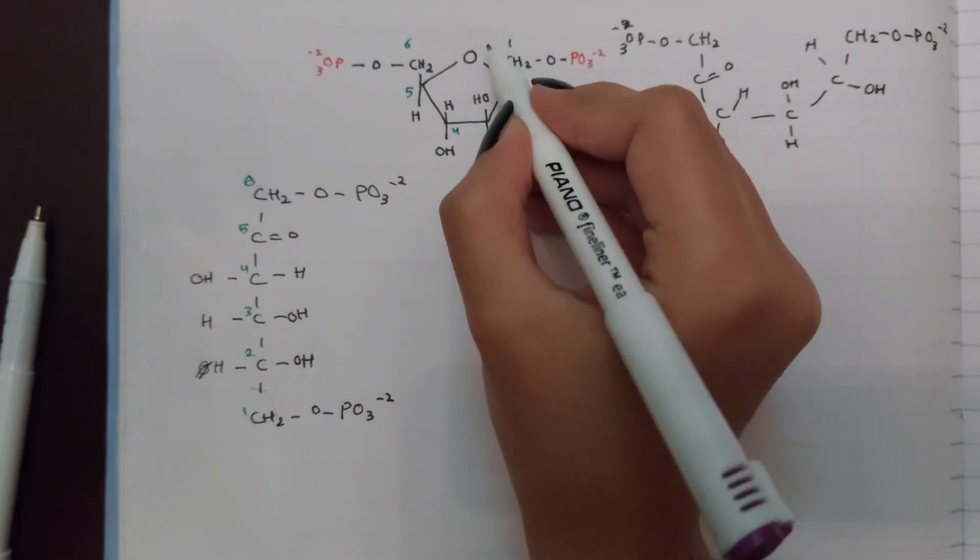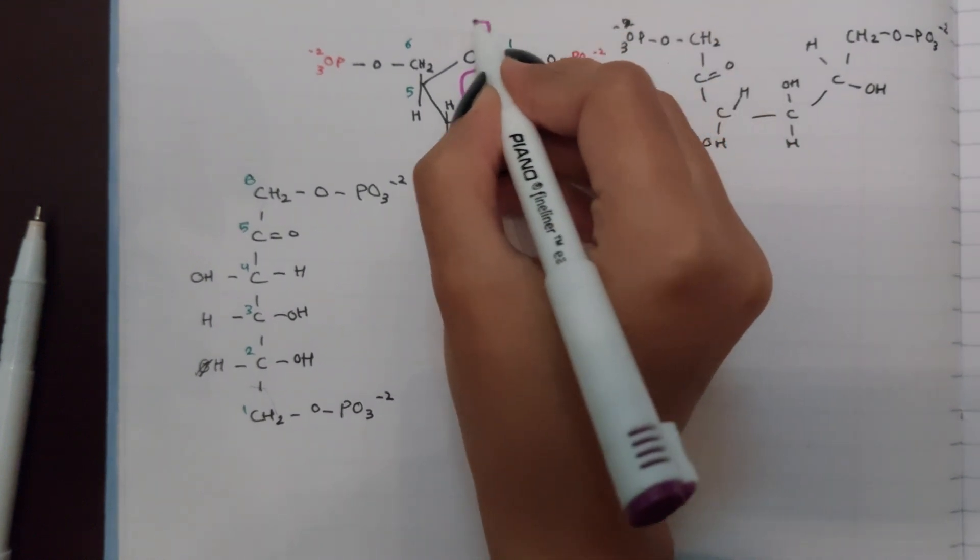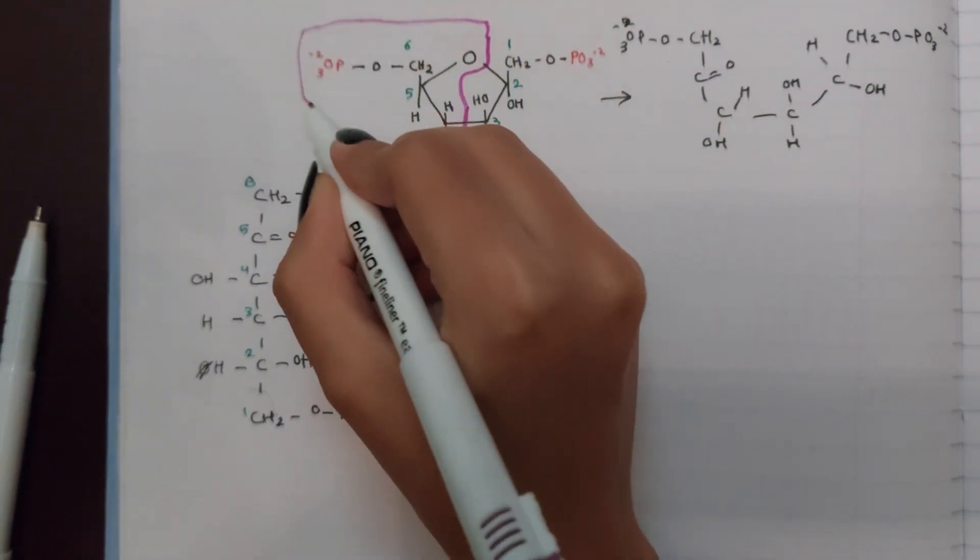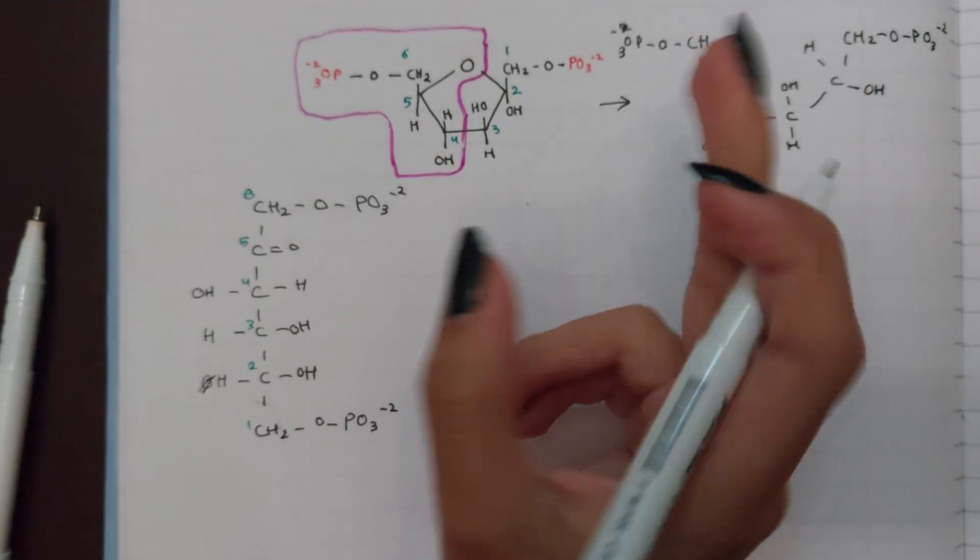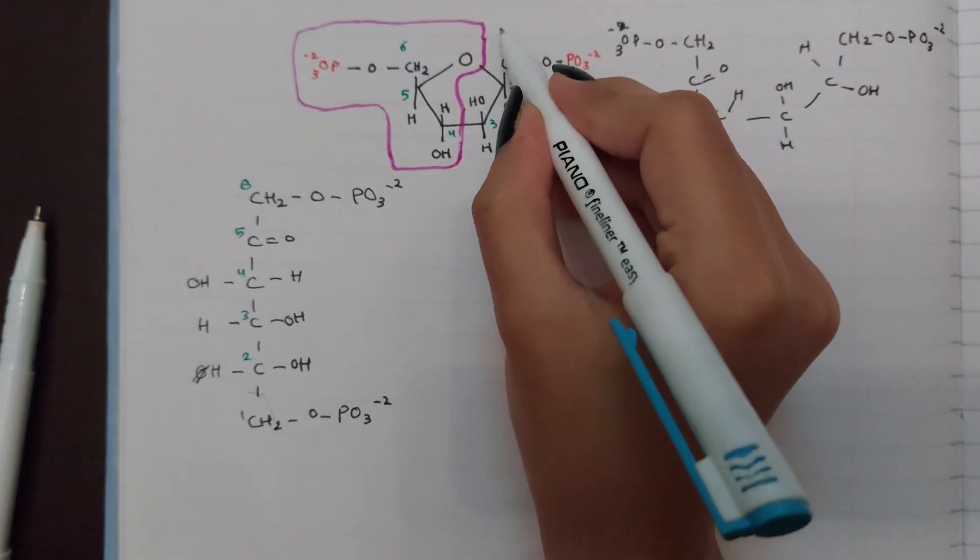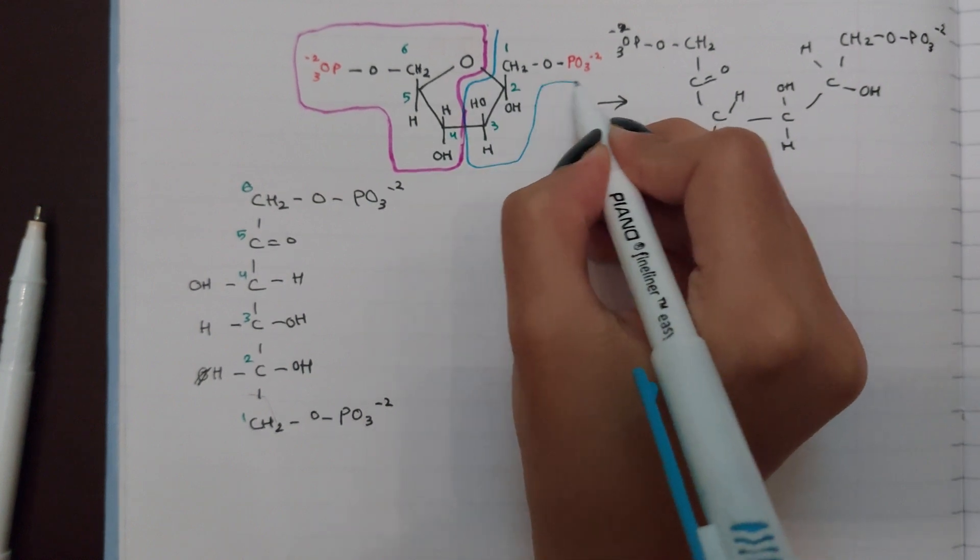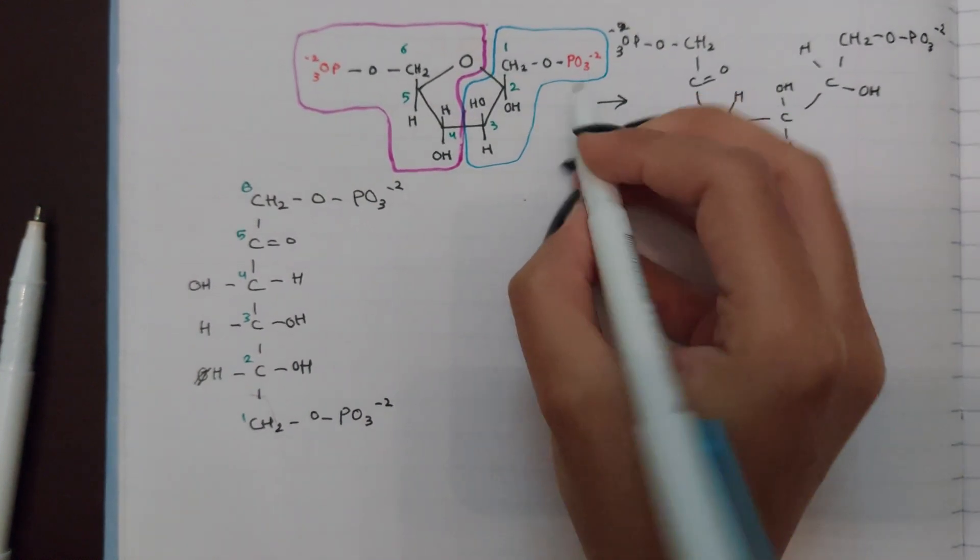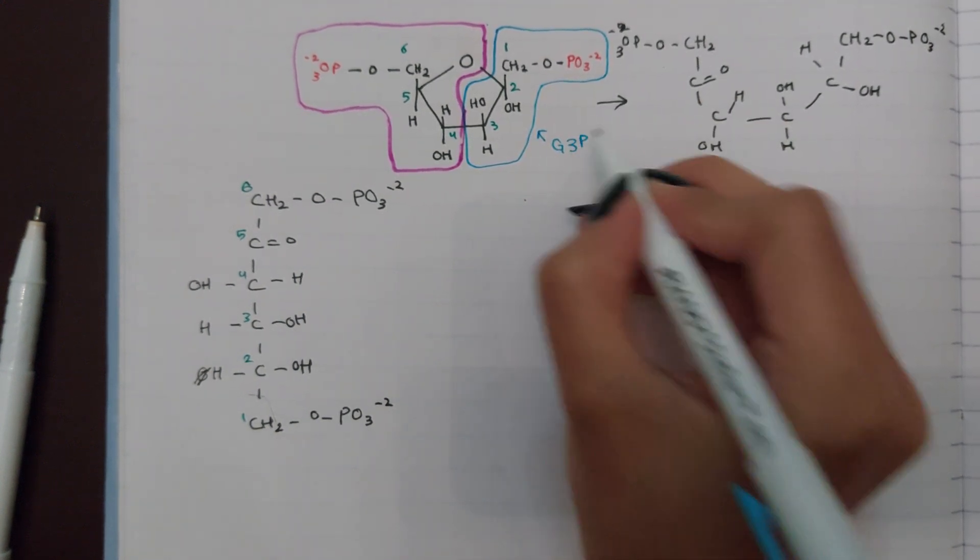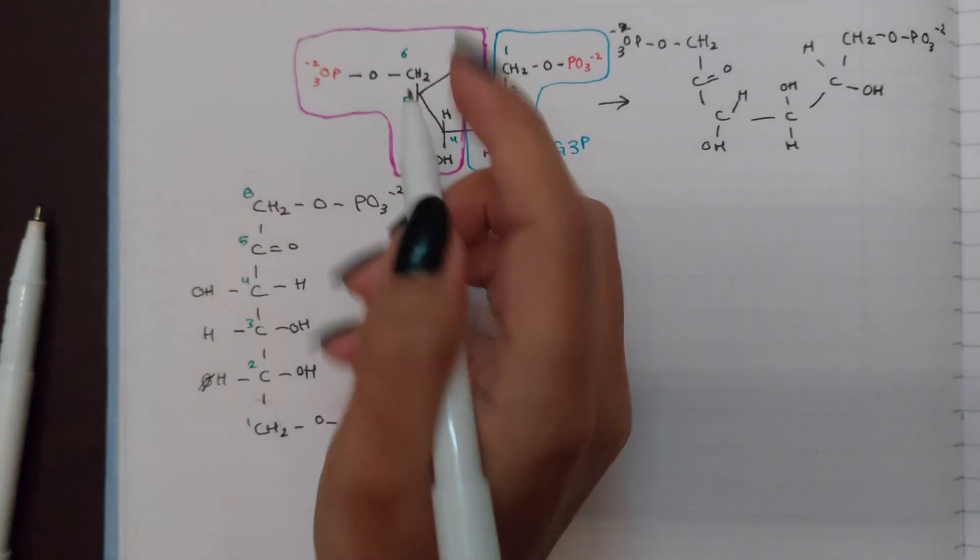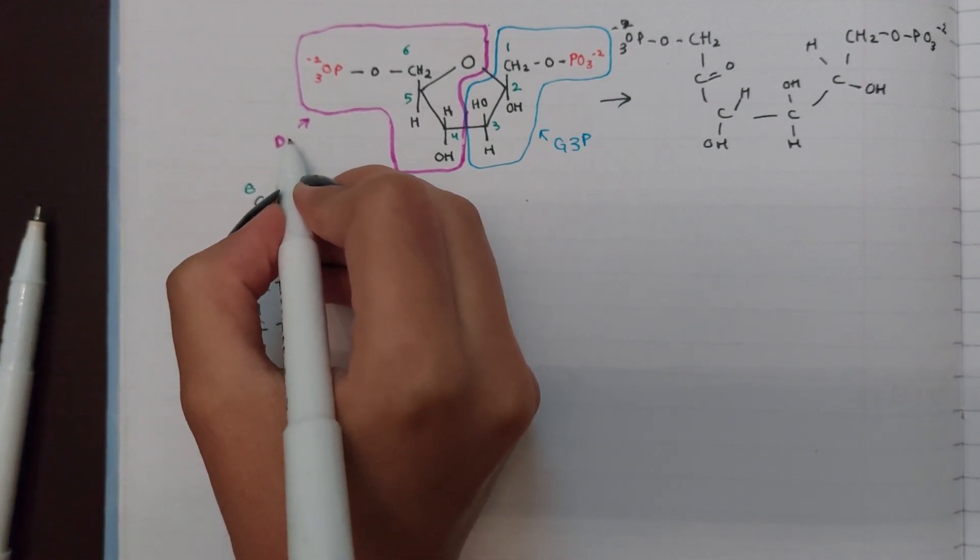So the aldolase splits the structure this way. I'm gonna color it with this purple pen so that it's easy to understand, and the other half with my blue pen. This is going to be our glyceraldehyde 3-phosphate, whereas this is going to be our dihydroxyacetone phosphate.